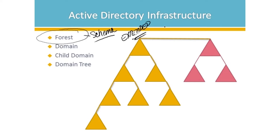One of the reasons that we have one Exchange organization per forest is because of the schema — we're really defining for Exchange what those attributes are going to be. On the domain, child domain, and domain tree — a domain really is what we call a security boundary. For example, let's say this is the absolute first domain that we have. We'll call it sjb.com. By installing Active Directory on that first machine, we create that domain, name it, and it also creates the forest.